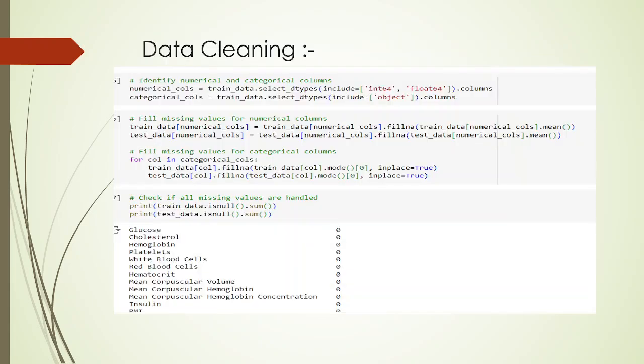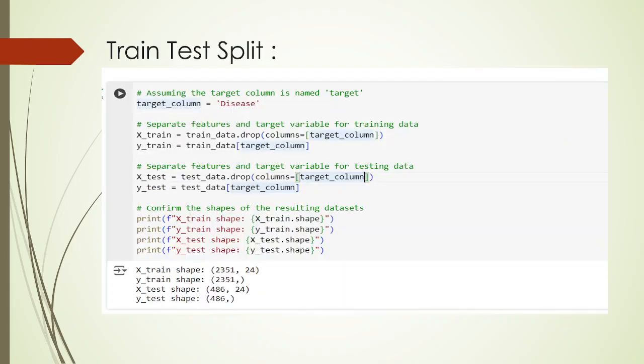Now we have to do the data cleaning. In data cleaning, we have to check what are the numerical columns and the categorical columns, then we have to fill those numerical and categorical columns. We have to eliminate the missing values. As you can see, there is no missing value now.